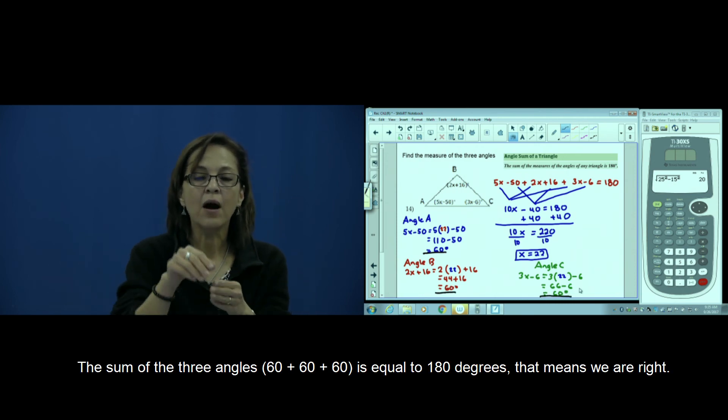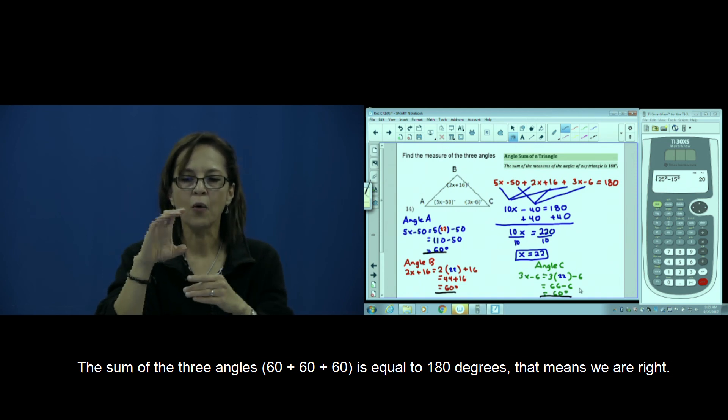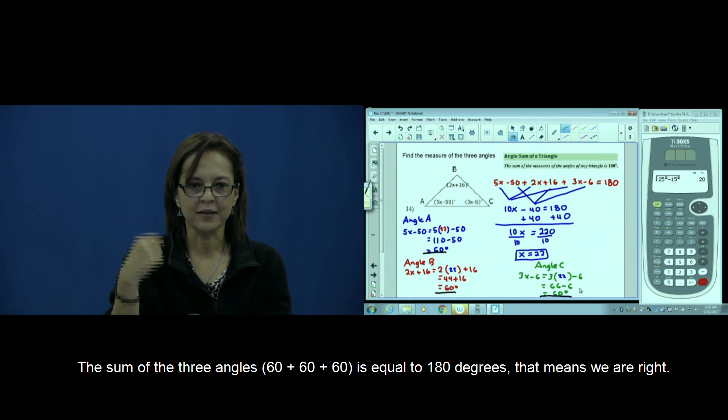The sum of the three angles—60, 60, 60—equals 180 degrees. We are right.